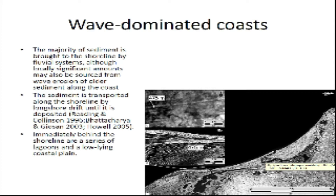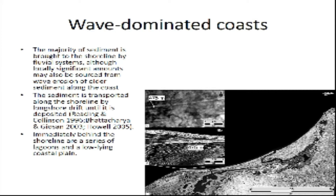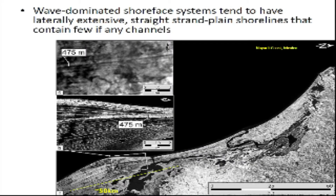A major process that reworks beach sediment is what is called longshore transport. You have looked at longshore transport in the assigned video on YouTube, 'A River of Sand.' Longshore transport is when waves approach the shoreline at an angle, resulting in net transport of the sand parallel to the coastline. Beaches are very sandy due to the high-energy wave-dominated environment. However, protected areas behind the beach can be fine-grained as the sediments are not affected by the approaching waves from the sea. In summary, wave-dominated systems tend to have laterally extensive, straight, narrow shorelines due to longshore transport that contain few, small rivers.